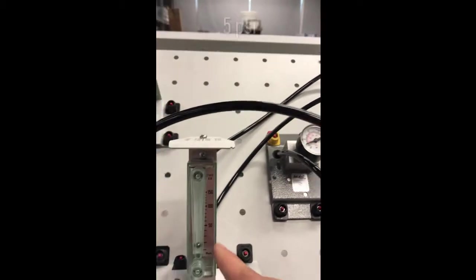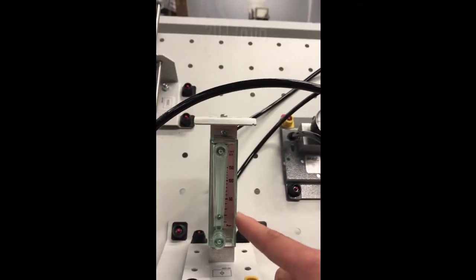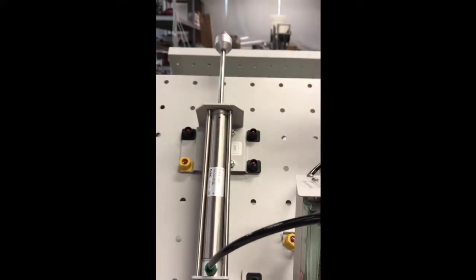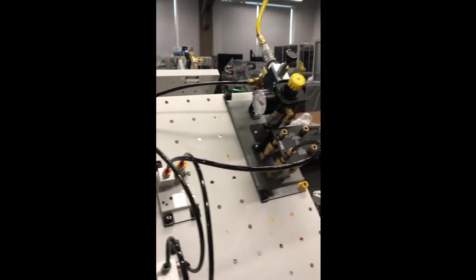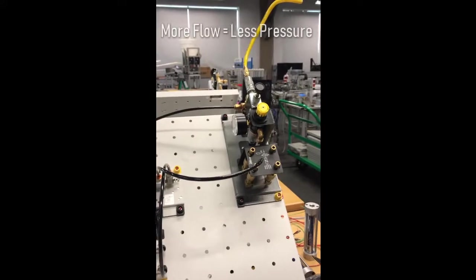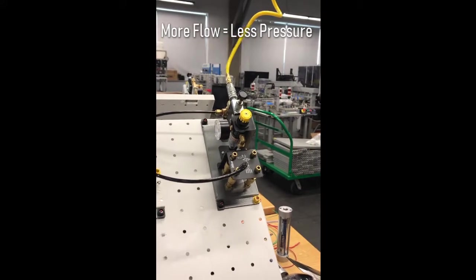Now we have readings of about 20 liters per minute on our flow gauge and 100% actuator speed. The relationship between flow and pressure is that the more flow you have, the less pressure you have.